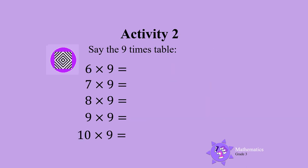Let's repeat this with the rest of the Nine Times Table. 6 times 9 is 54, 7 times 9 is 63, 8 times 9 is 72, 9 times 9 is 81, and 10 times 9 is 90. Now, let's add the digits in the answer.